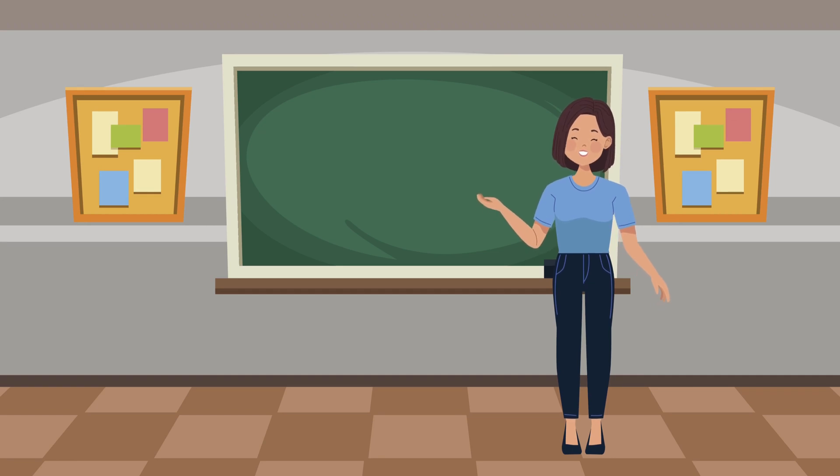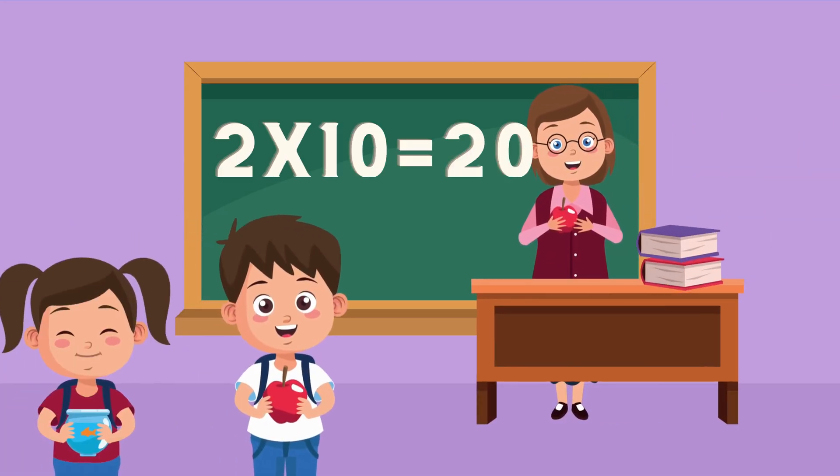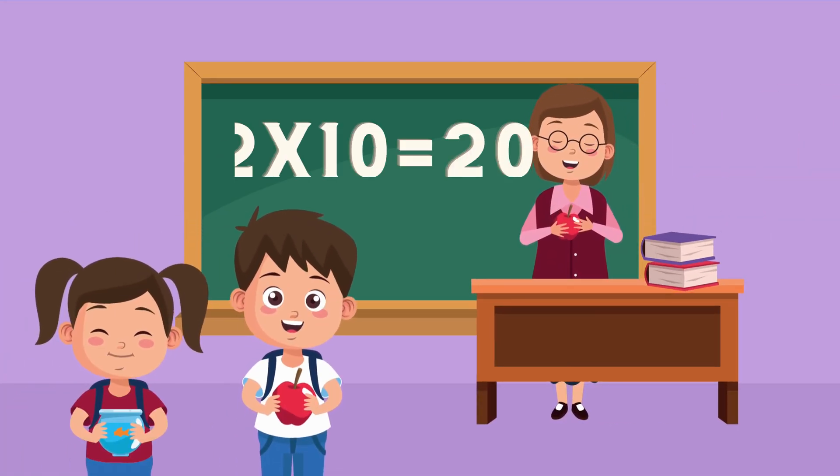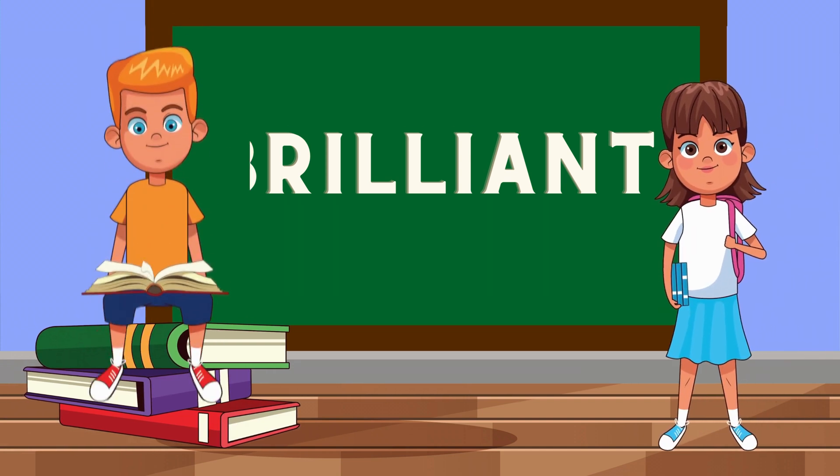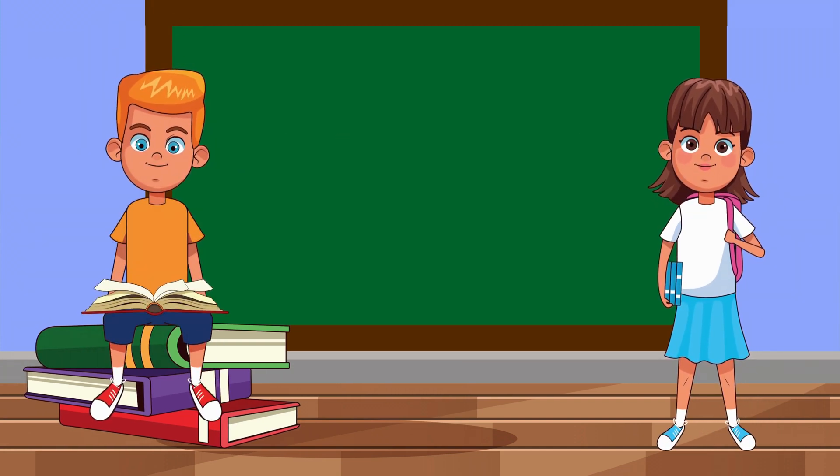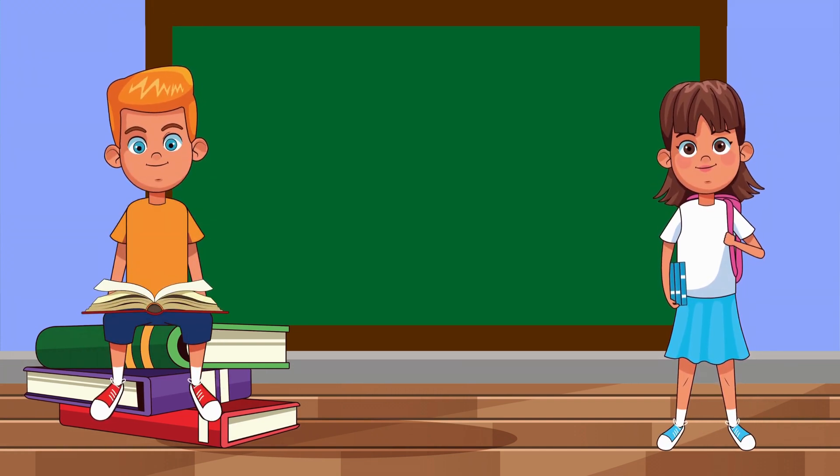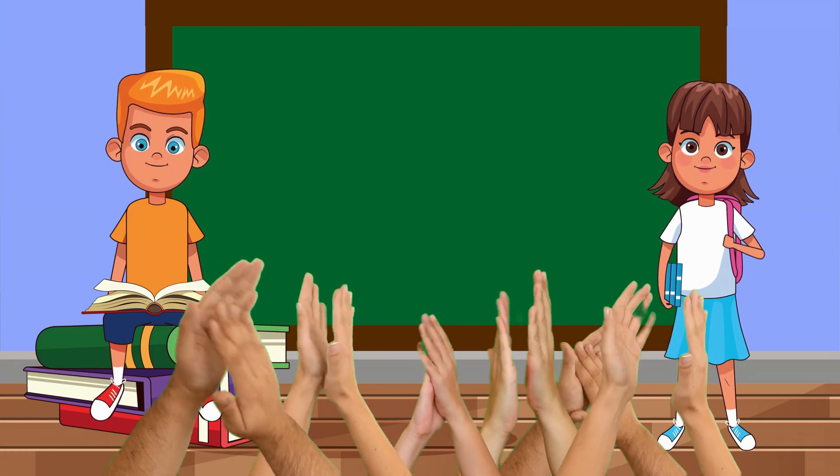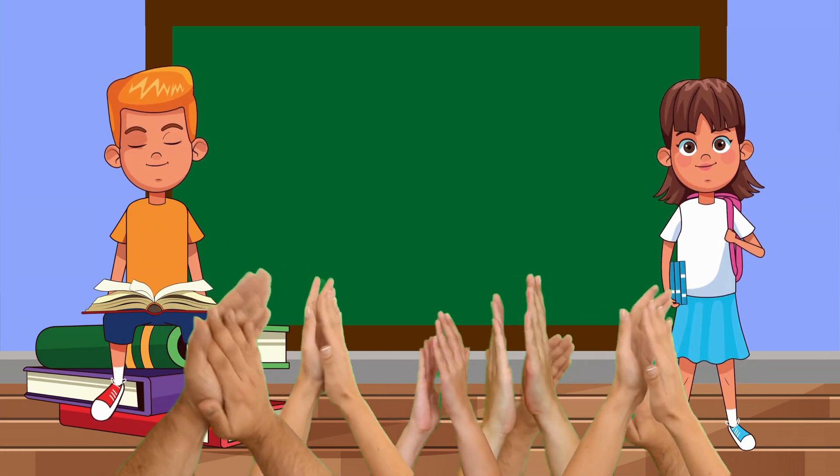Now, for our grand finale. 2 times 10. 2 times 10 is 20. Brilliant! You did it! You conquered the second multiplication table! Give yourselves a round of applause, my magical friends!